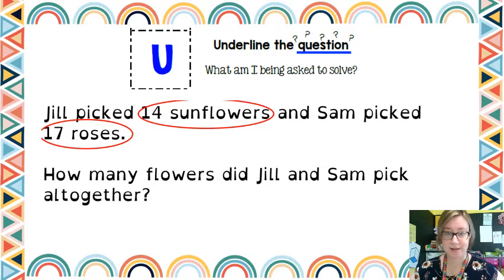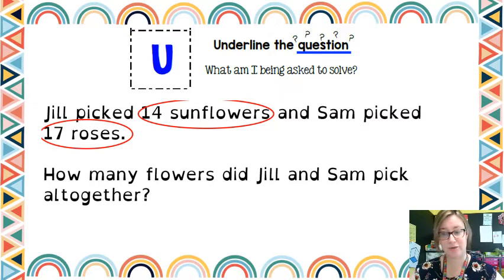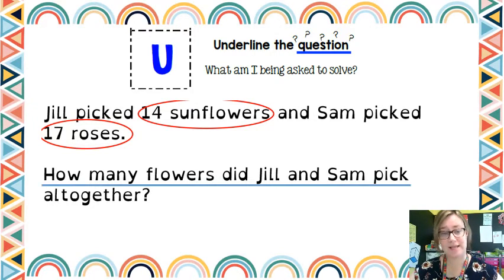In the next step, the U stands for underline the question. So what are we actually being asked to solve here? The question is usually found in the last line, but you do need to look for it sometimes. In this case, it is here: how many flowers did Jill and Sam pick altogether?